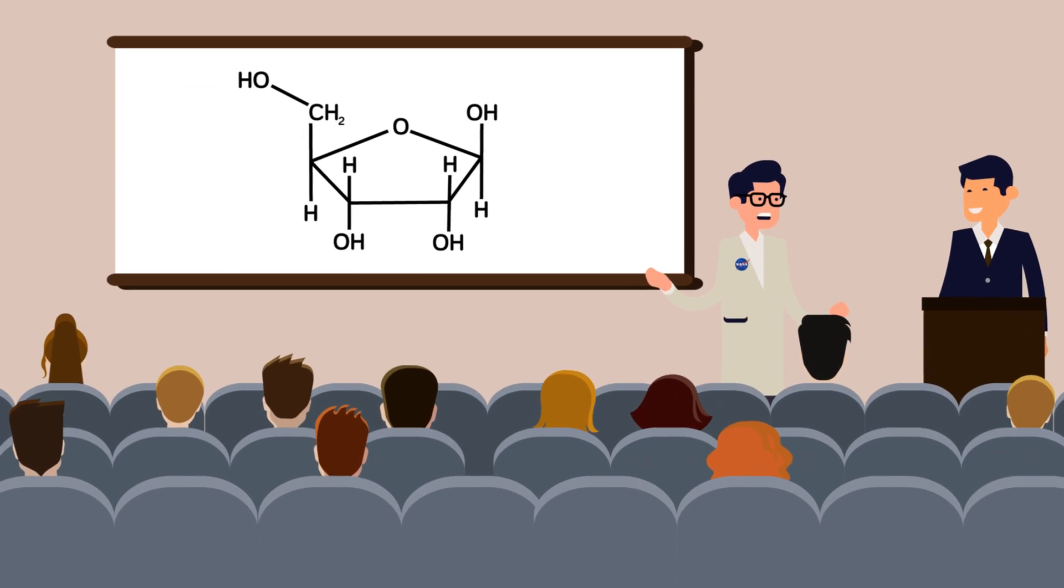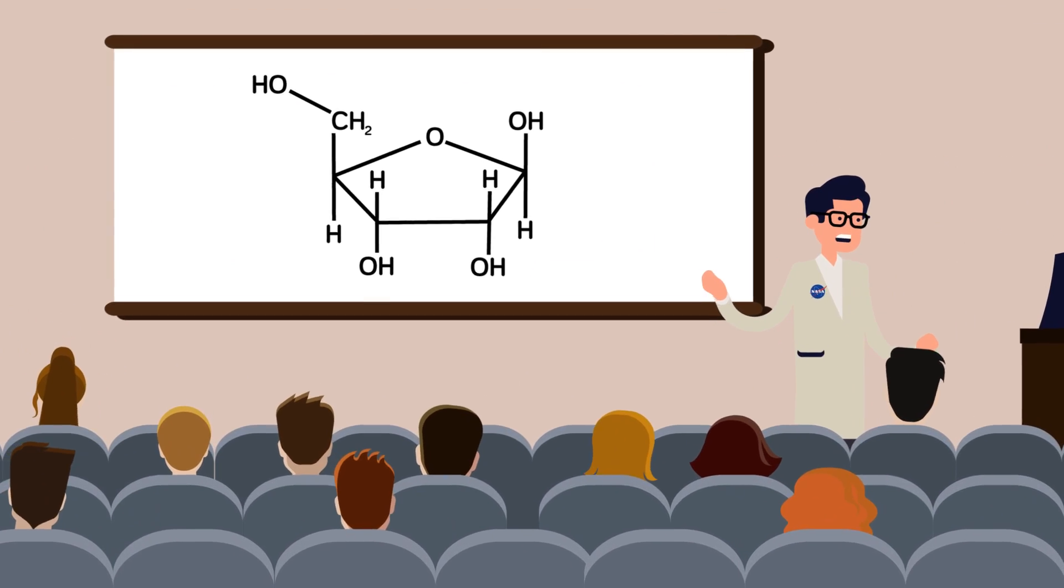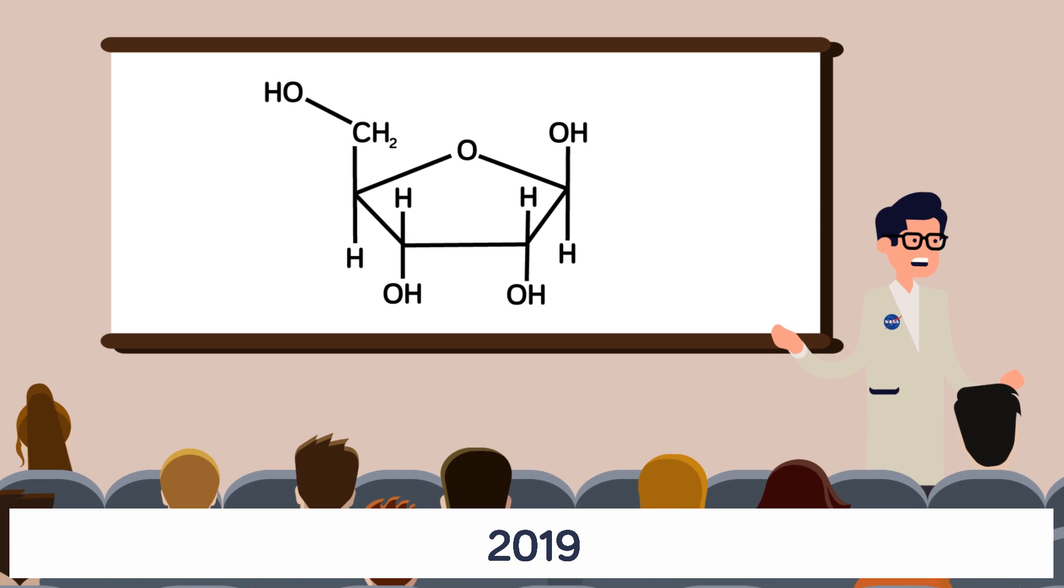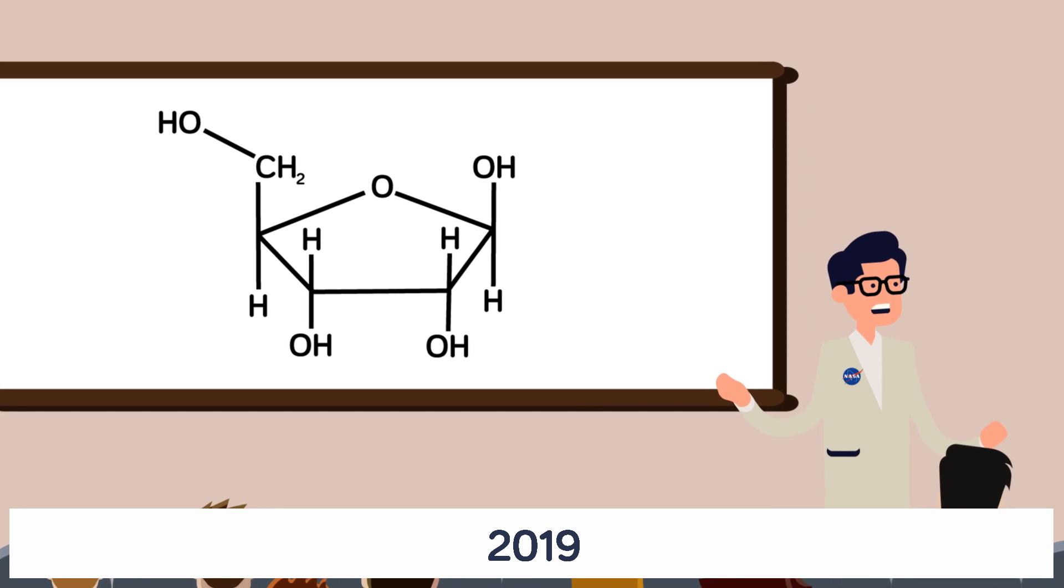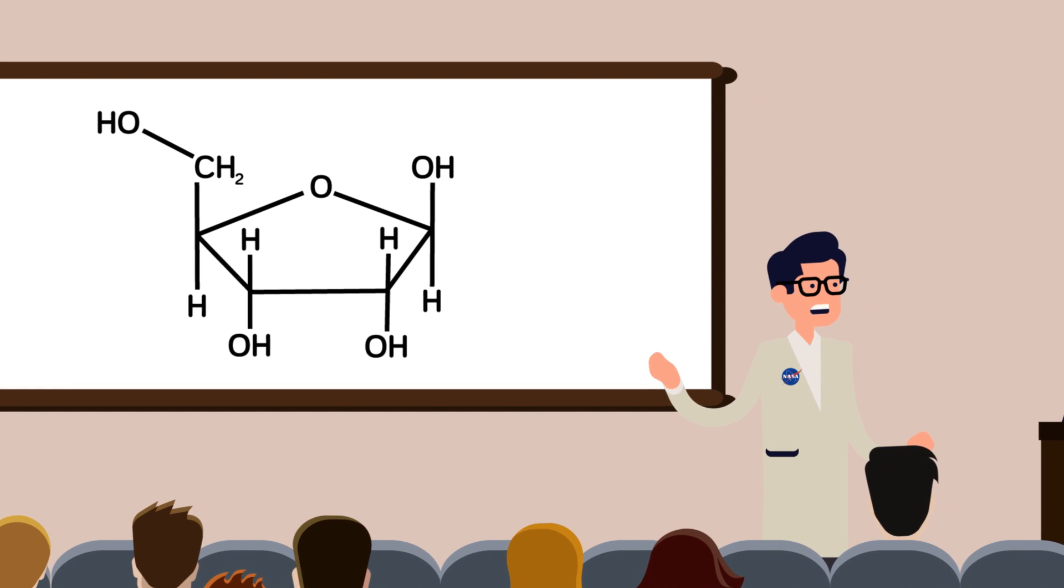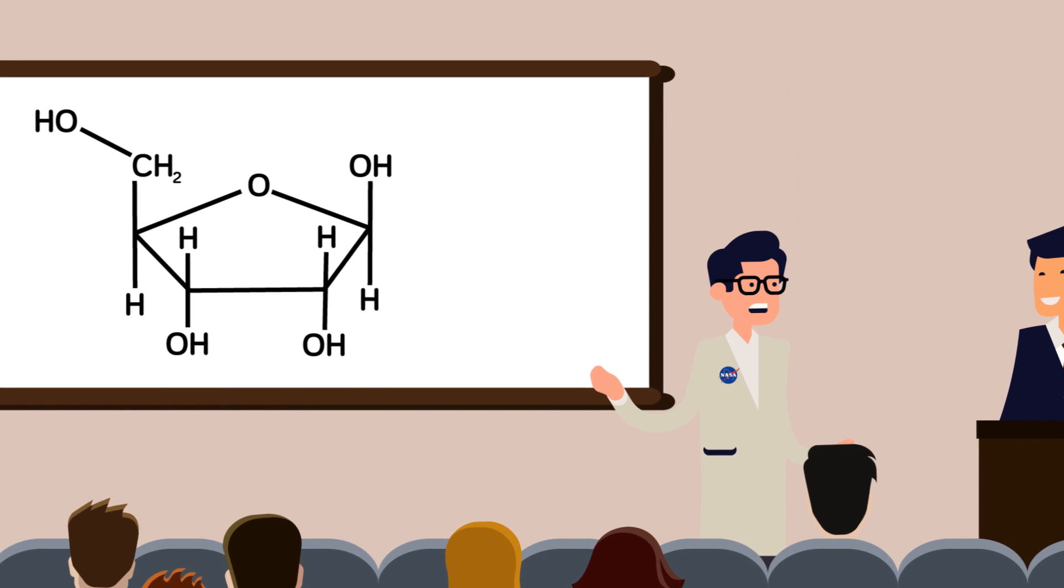Now, fast forward to 2019, and listen to what some NASA scientists and some Japanese academics had to say about what they found in two meteorites. They discovered something called ribose, which is a sugar found in RNA and DNA. Why is this important? Well, we'll let one of the Japanese researchers explain.